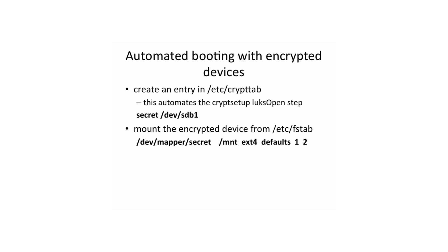Only after you manually enter the passphrase will the system continue. Once you have the information in /etc/crypttab and the password is entered during boot, the next step is the /etc/fstab file. In fstab, you put the name of the encrypted device, the mount point, and all the other options you normally include — file system type, mount options, dump support, and automated file system check options.